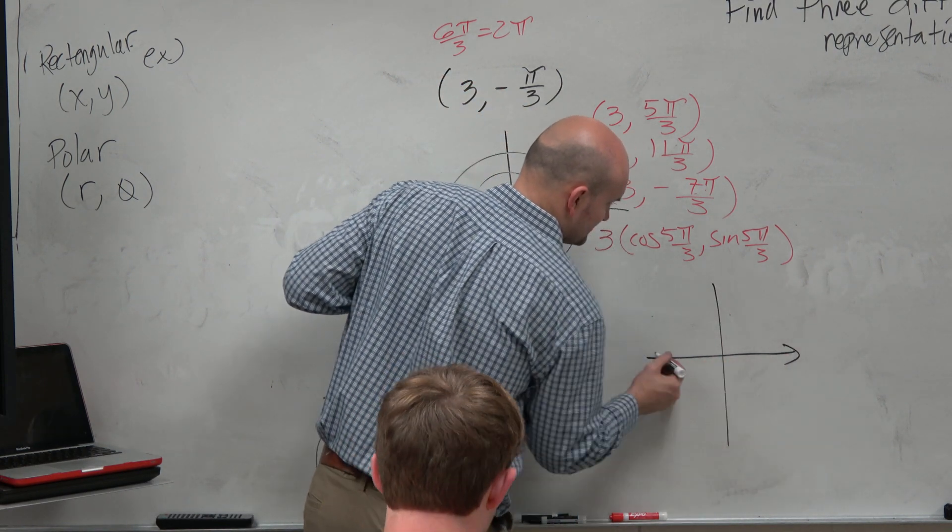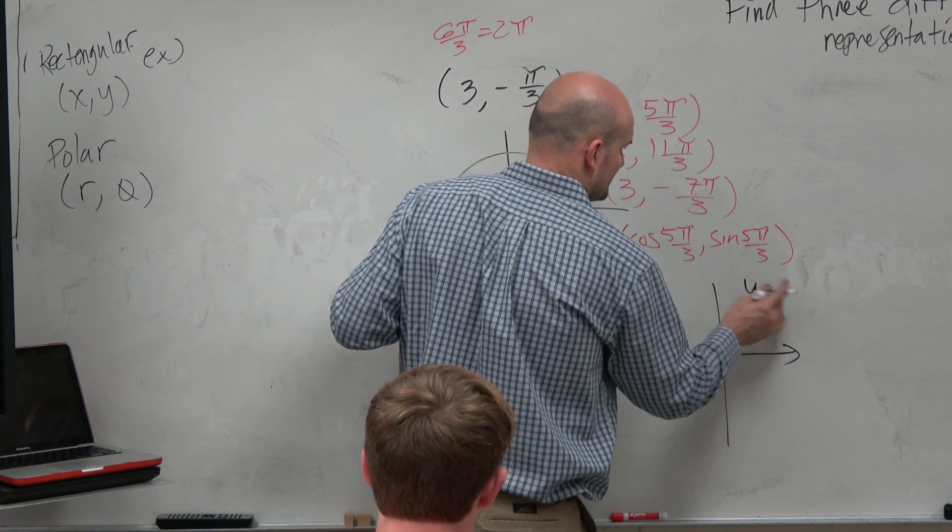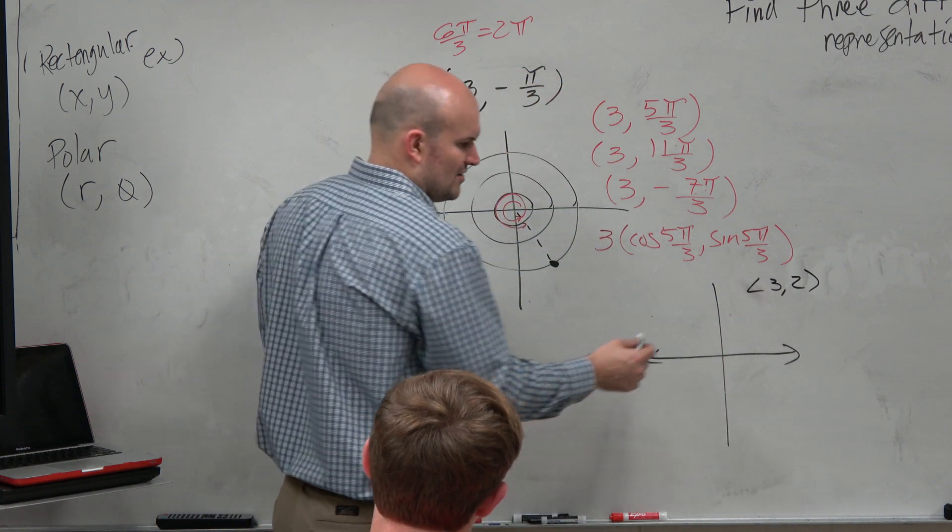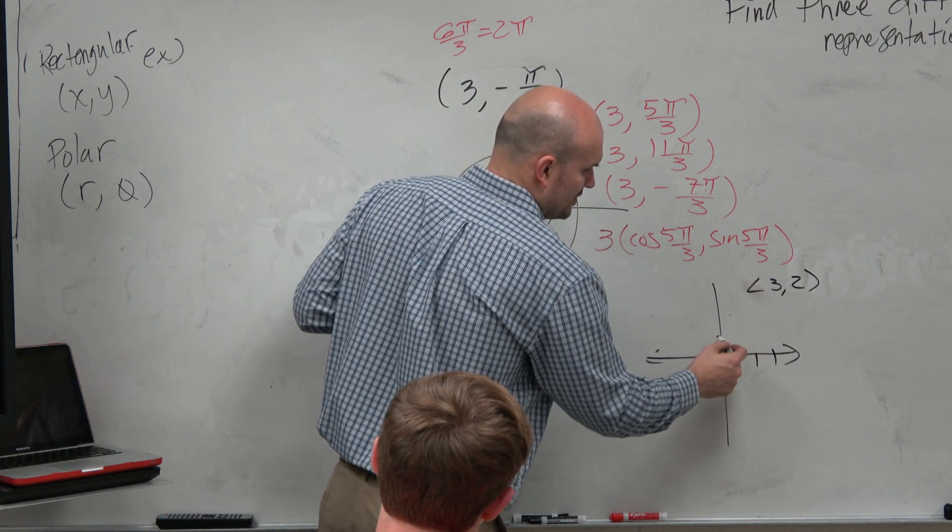If you guys remember, when I gave you a vector, I gave you a vector like, let's say I said, graph the vector 3 comma 2. And you'd say, OK, and just go 3 units over, 2 units up.